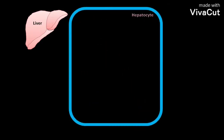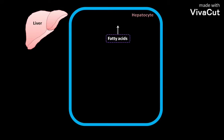The liver contains hepatocytes, which perform many metabolic functions. The fatty acids entering a hepatocyte have several different fates. Some fatty acids are converted to liver lipids, while under most circumstances, free fatty acids undergo beta-oxidation to produce acetyl-coenzyme A and NADH.